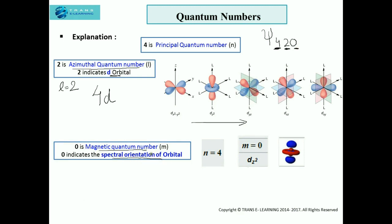As in this case l is 2, it represents the d orbital. If we consider different spectral orientations of orbitals, the value of magnetic quantum number for these five orbitals will be: for dx²-y², m will be plus 2. If we consider m equals 0, then the spectral orientation will be dz², which is along the z-axis.